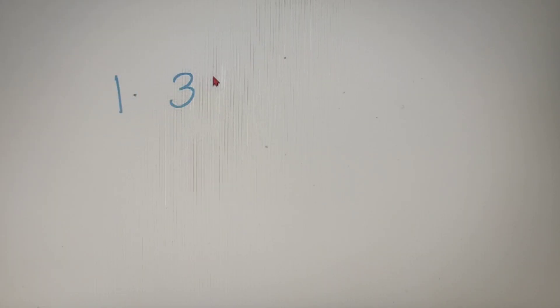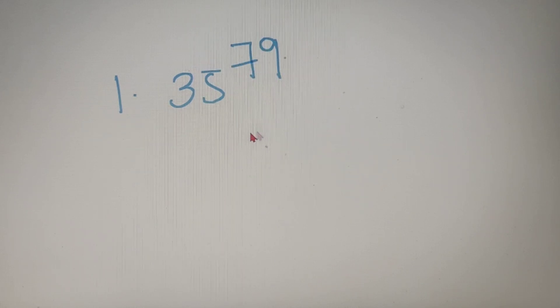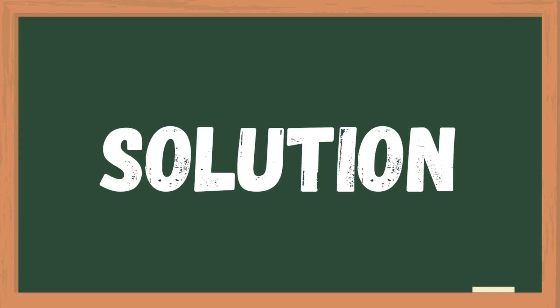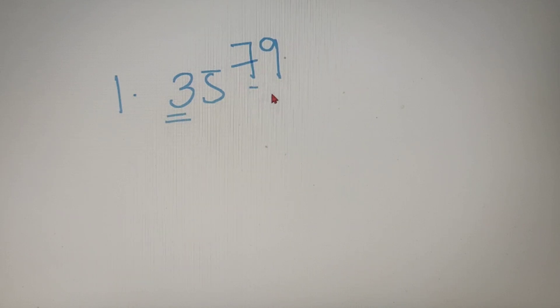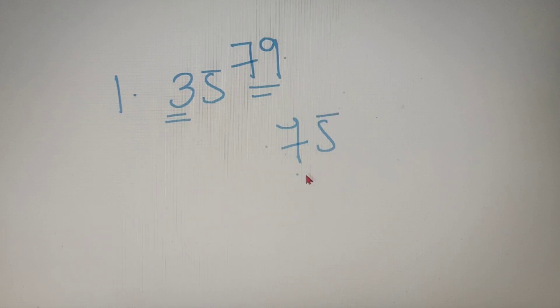For the first example, we have to find out the last two digits of the number 35 raised to the power 79. We can see that the second last digit is odd as well as the power is also odd, so the last two digits will be 75.